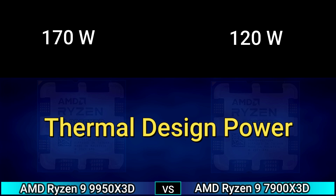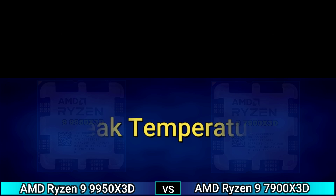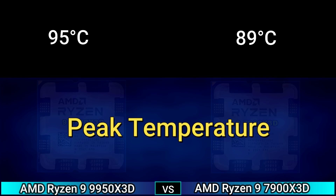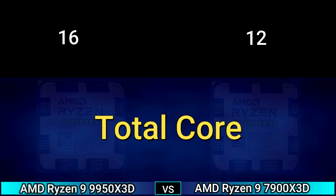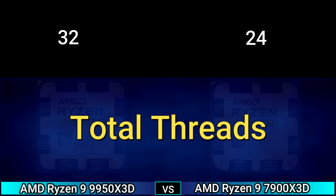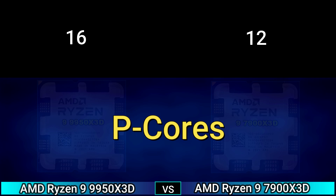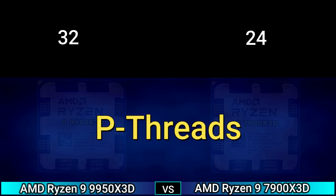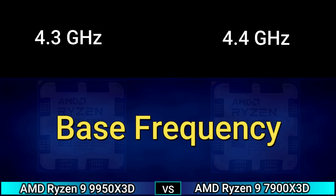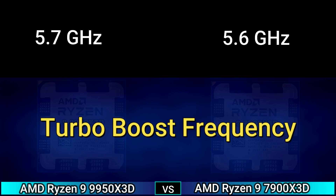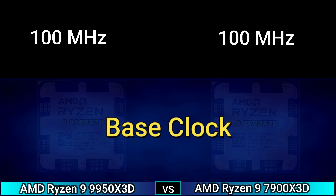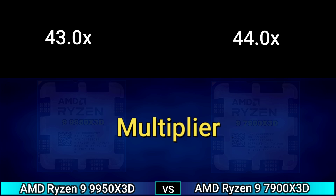Socket AM5, peak temperature 95 degrees Celsius and 89 degrees Celsius. CPU performance: total cores 16 and 12, total threads 32 and 24, performance cores 16 and 12, base frequency 4.3 GHz and 4.4 GHz, turbo boost frequency 5.7 GHz and 5.6 GHz, base clock 100 MHz, multiplier 43.0x and 44.0x.